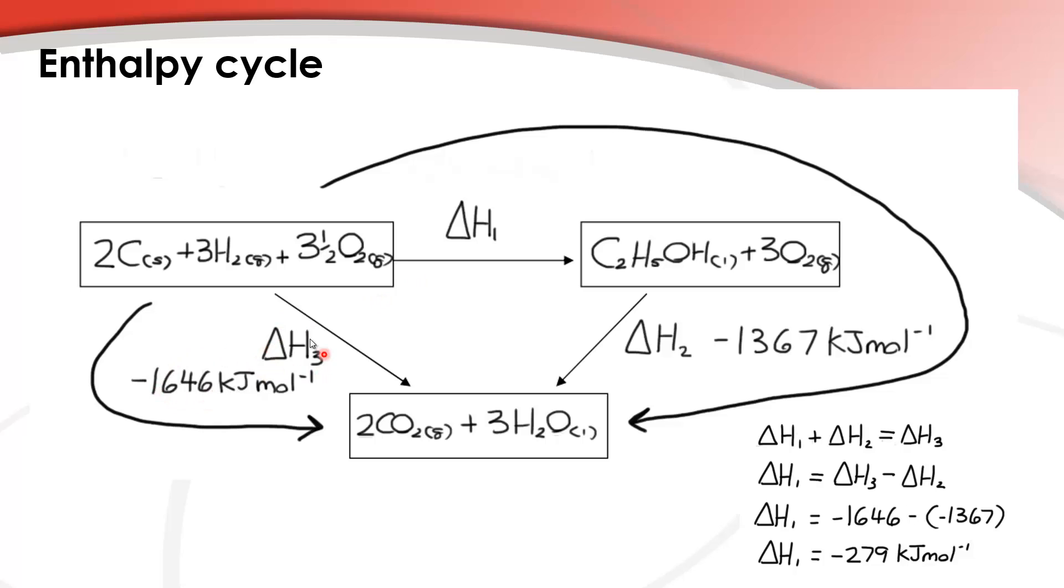So if we know ΔH3 and we know ΔH2, then we can calculate ΔH1. So down here I've got the calculation. So basically if you follow the arrow, this big arrow here, we can say that ΔH1 plus ΔH2 equals ΔH3.